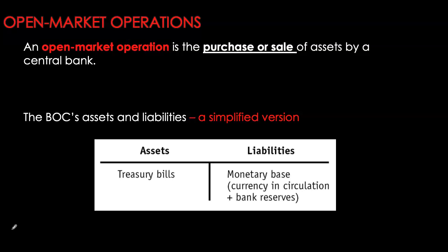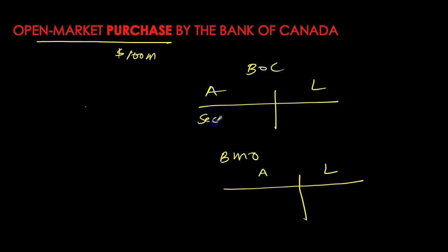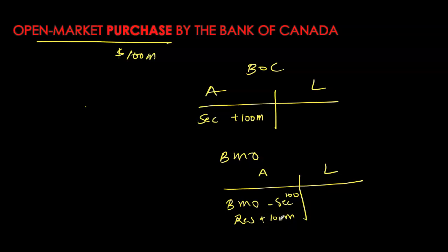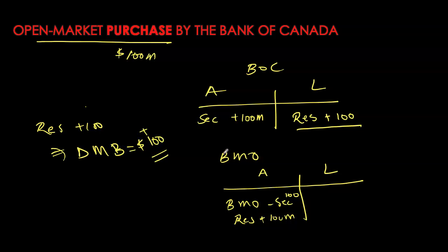An open market operation is simply the purchase or sale of assets — in our case, Government of Canada bonds or treasury bills — by the central bank. In an open market purchase, the Bank of Canada purchases securities from a financial institution, say $100 million worth. As a result, securities on the Bank of Canada's balance sheet increase by $100 million, while securities held by BMO fall by $100 million. In exchange, BMO's reserves increase by $100 million. Since reserves are a monetary liability for the central bank, they must be entered as a liability — so the Bank of Canada has increased its monetary liabilities by $100 million.